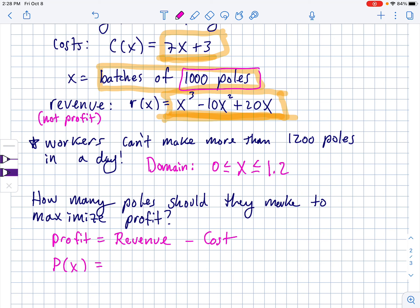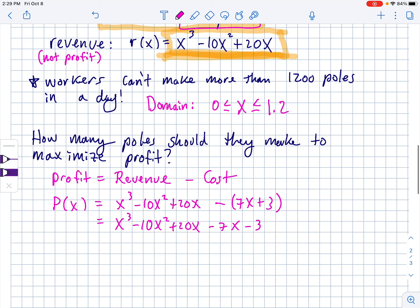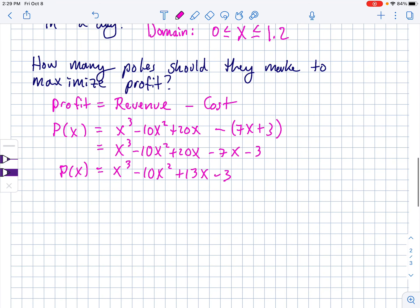We have equations for both of those. So for our profit P of X, revenue is X cubed minus 10X squared plus 20X. But then we're going to subtract out the cost, which is 7X plus 3. Let's do just a little cleanup on that. There's not much we can do, but we can distribute the negative combine like terms. So the 20X and the negative 7X give us 13X minus 3. So this is the profit equation. We want to know when this is maximized. We want to maximize profits.